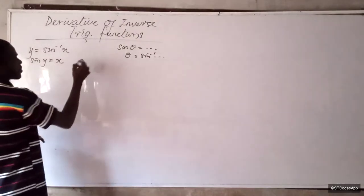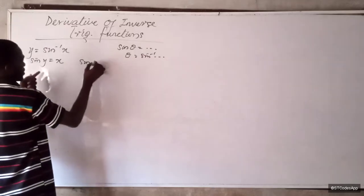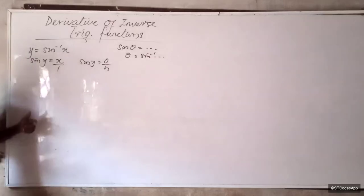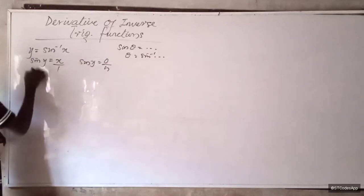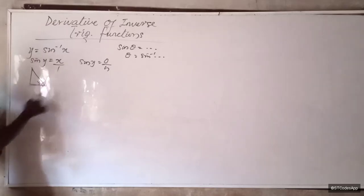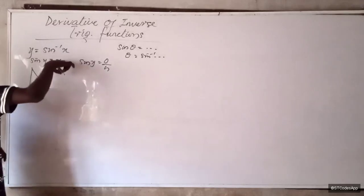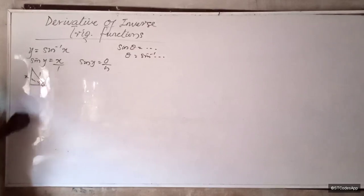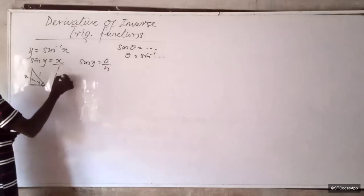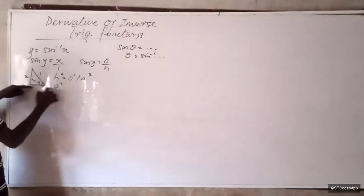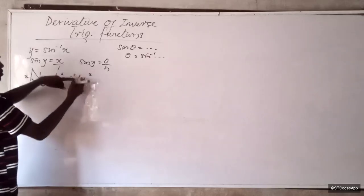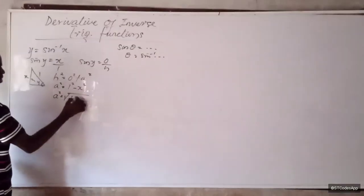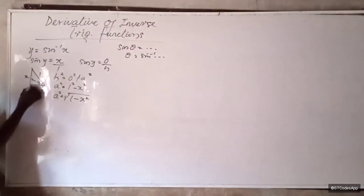Recall from SOHCAHTOA that sine y is equal to opposite over hypotenuse. So it therefore means that our x is our opposite, and since it's over 1, it means that 1 is the hypotenuse. So in our triangle, y is our angle, 1 is the hypotenuse, and x is the opposite. From the Pythagorean theorem, adjacent squared equals hypotenuse squared minus opposite squared, so adjacent squared equals 1 squared minus x squared. Therefore, adjacent equals the square root of 1 minus x squared.